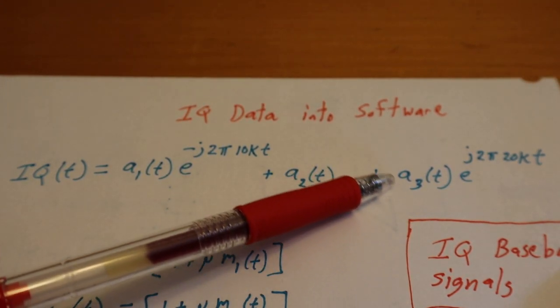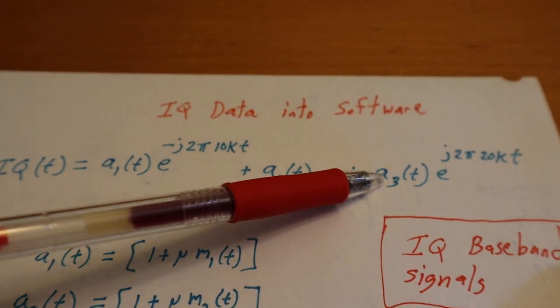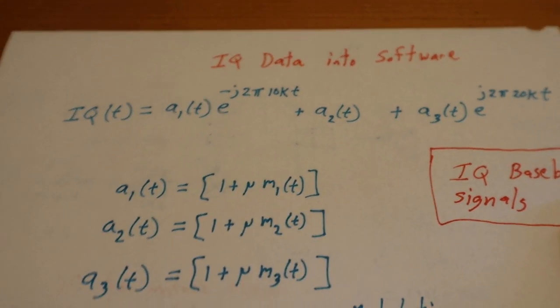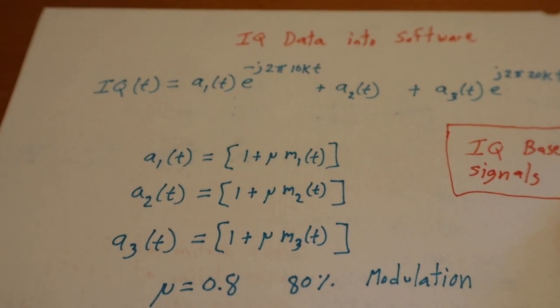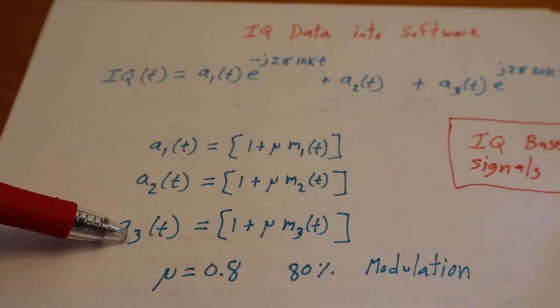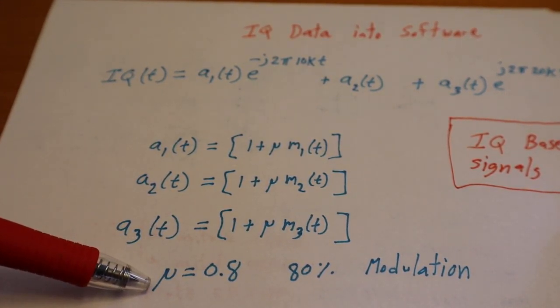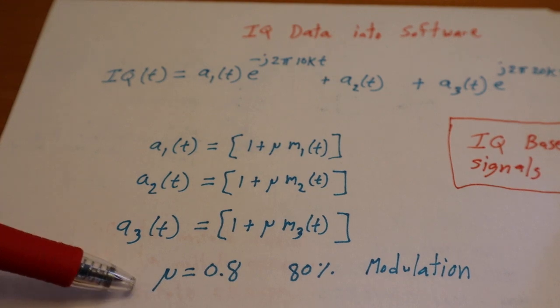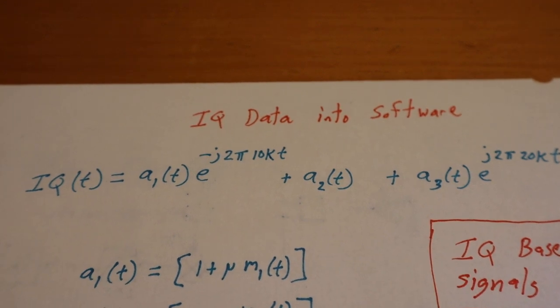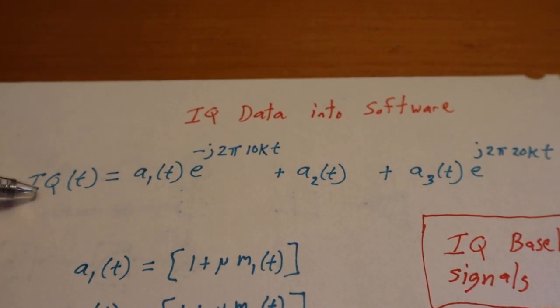And these a terms are just showing you the three amplitude modulated signals. So that's these terms here. We'll go ahead and assume 80% modulation, why not. But the takeaway is this equation up here.